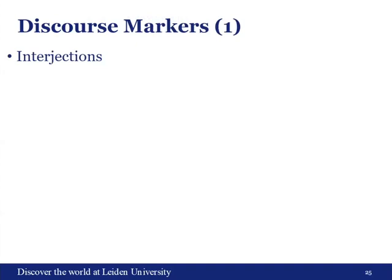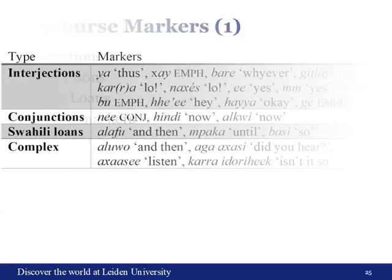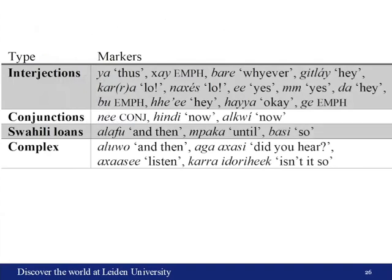Moving on to the last topic: discourse markers. This is relatively new, so I'm still figuring out what it all means. There are four types: interjections, conjunctions, Swahili loans, and complex markers. Interjections have by far the most variation and are also the most prevalent in the narratives. There are several different forms translated in the same way — such as 'hey' or 'lo' — because the exact scope and meaning of these markers has not necessarily been disentangled yet.